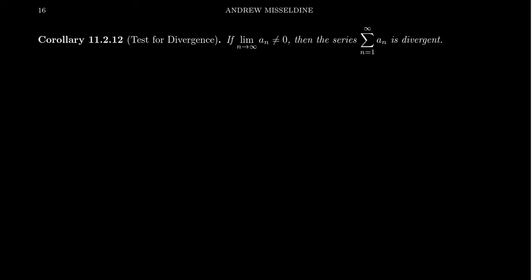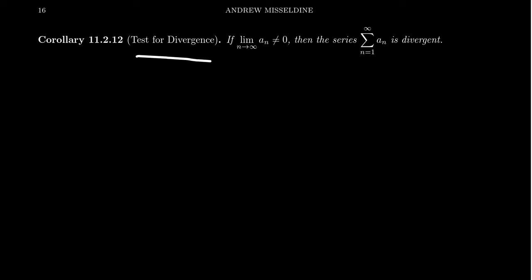If we take the logical contrapositive of that statement, we get the following useful observation: if the limit of the sequence does not converge to 0, then the associated series must be divergent. We're not saying the sequence is divergent — just that if the sequence doesn't converge to 0, the previous theorem guarantees the series is divergent. Because if the series were convergent, the limit would have to go to 0, giving a contradiction. This is commonly referred to as the test for divergence.